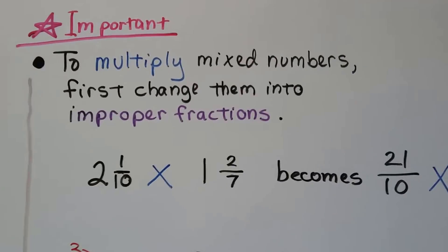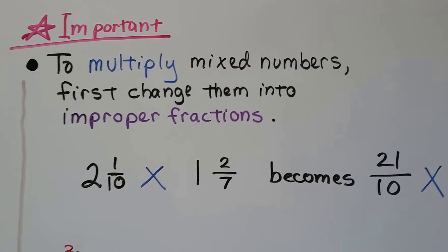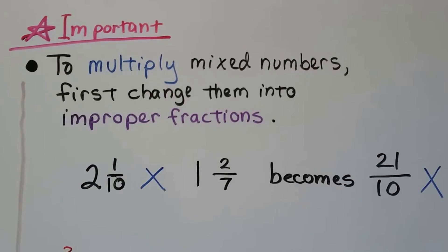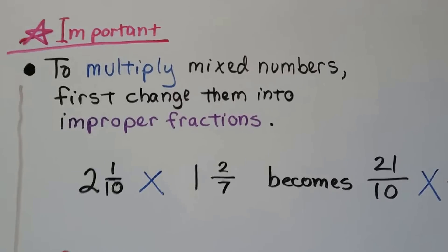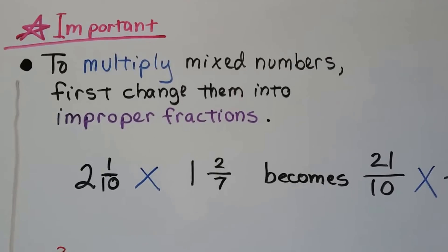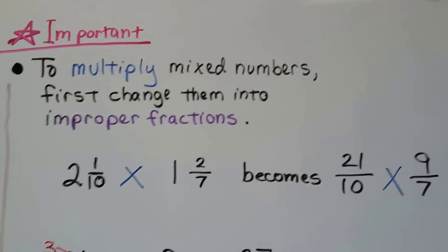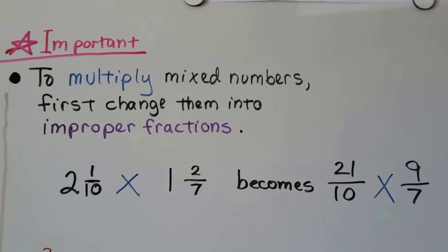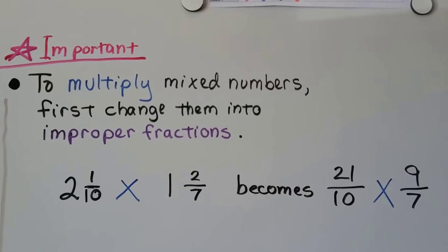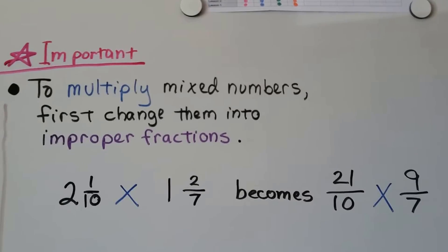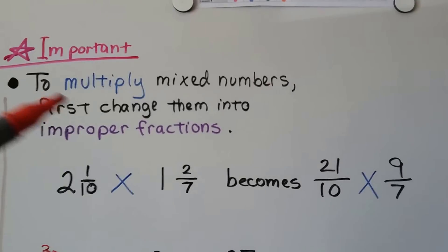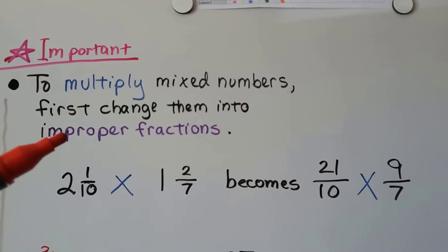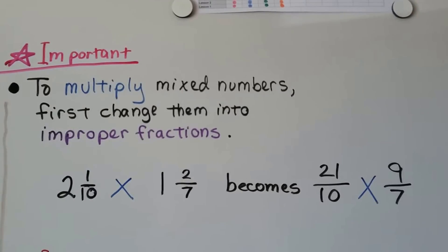Now this is really, really, really important. To multiply mixed numbers, you have to change them to improper fractions first. You cannot multiply the fractions, then multiply the whole numbers and put them together. It will not work and you will get the wrong answer. And I bet you anything those tricky GED people will have one of those wrong answers as a possible choice. So you'll think, oh look, the answer is there and you'll mark it and it won't be the right answer because they tricked you. Always change your mixed numbers into improper fractions before you multiply.